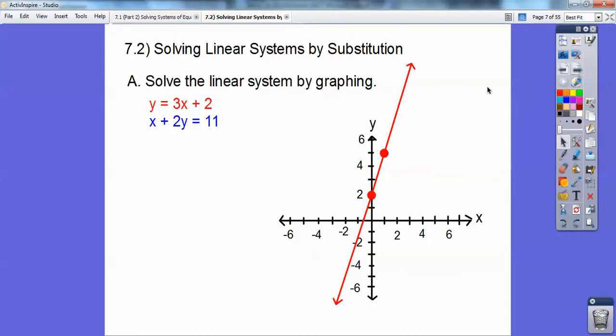I'm going to connect them up, and there's that red line right there. Now I'm going to do the blue line. Now I could do the intercepts, and I started doing that earlier, except when I do the intercepts, I get X equals 11, and I just didn't have enough room over here. So what I'm going to do is solve for Y.